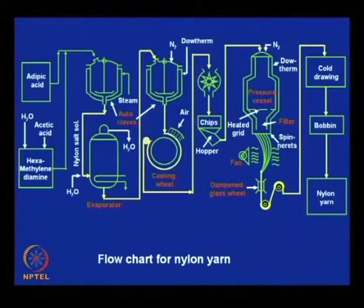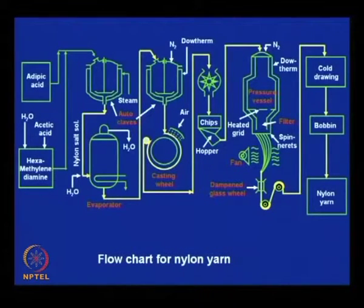Now, this is a condensation polymerization - it needs strict control of stoichiometry. If stoichiometry control is not properly maintained, one cannot achieve high molecular weight product. Even if you go up to 99 percent conversion, you may not get high molecular weight polymer unless you have a 1:1 or equimolar ratio of reactants accurately taken.